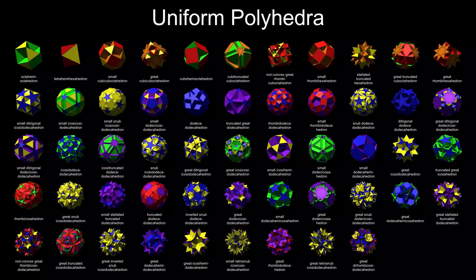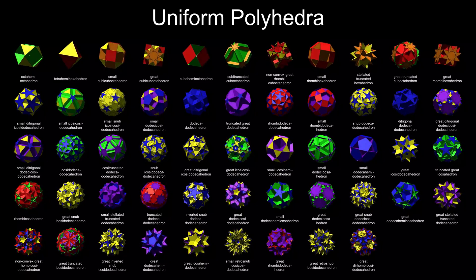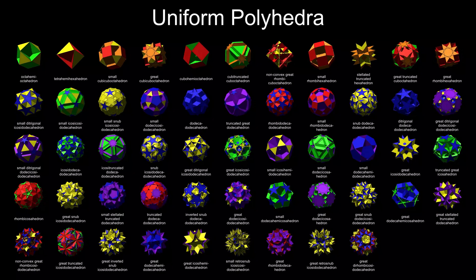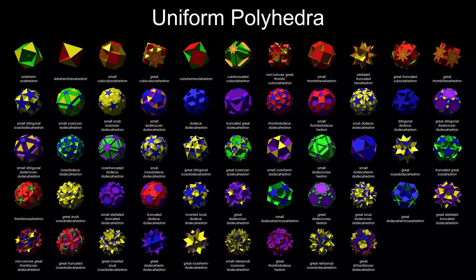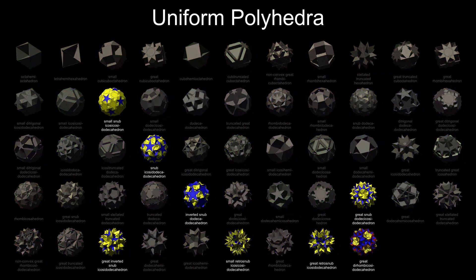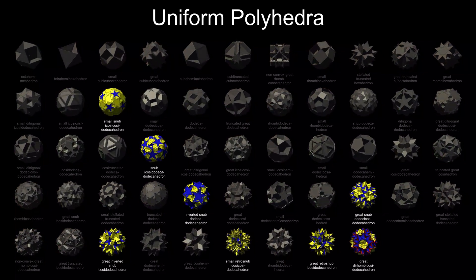Welcome to the final part of this series about the Uniform Polyhedra, and I've saved the best till last. We've covered 45 polyhedra so far. This part will cover the remaining eight, the most complicated ones, the monster snubs.